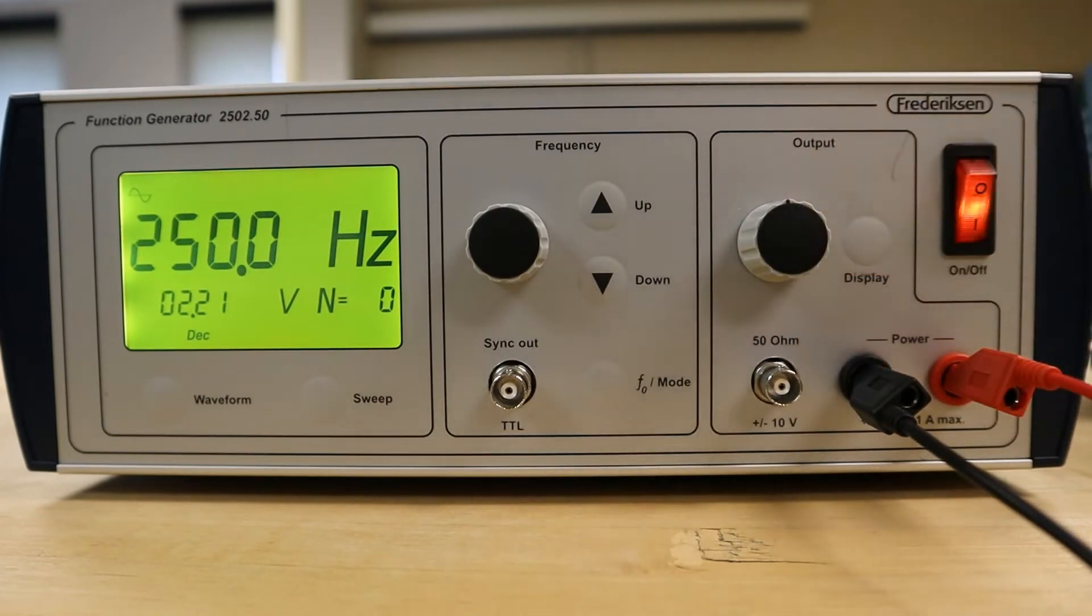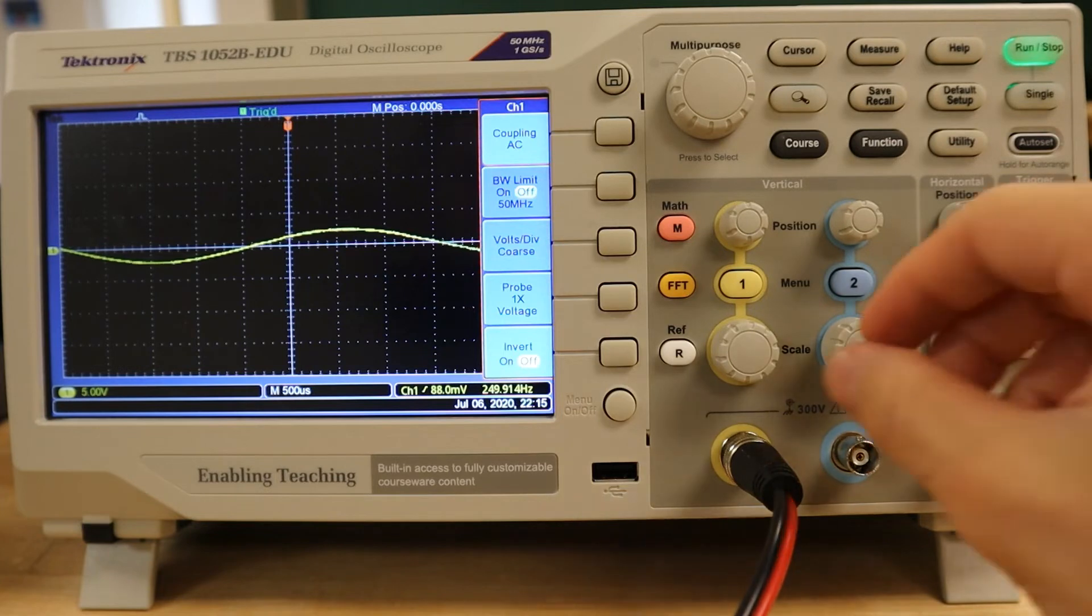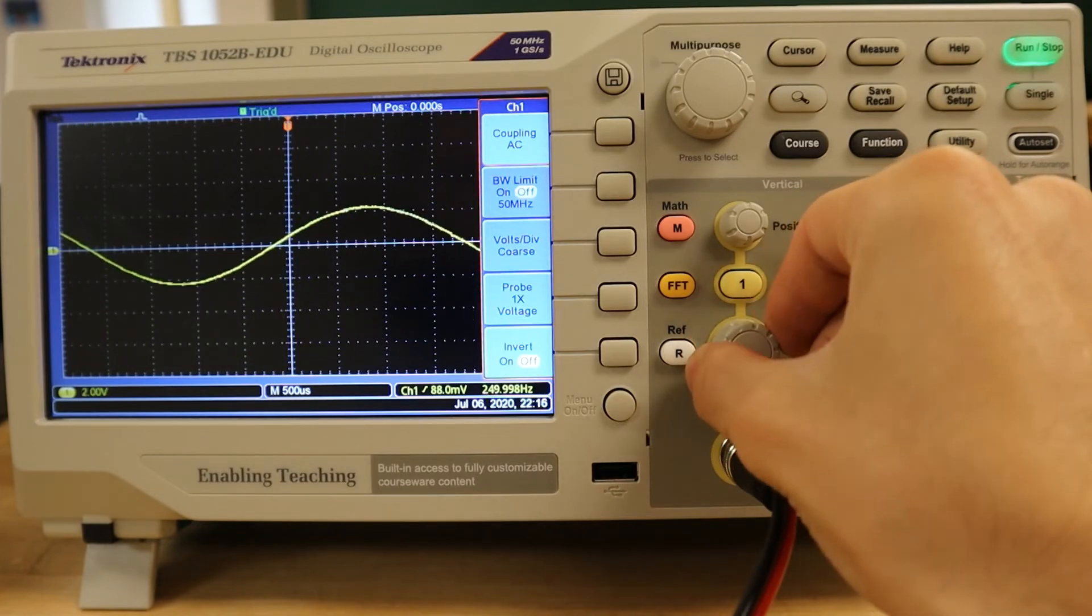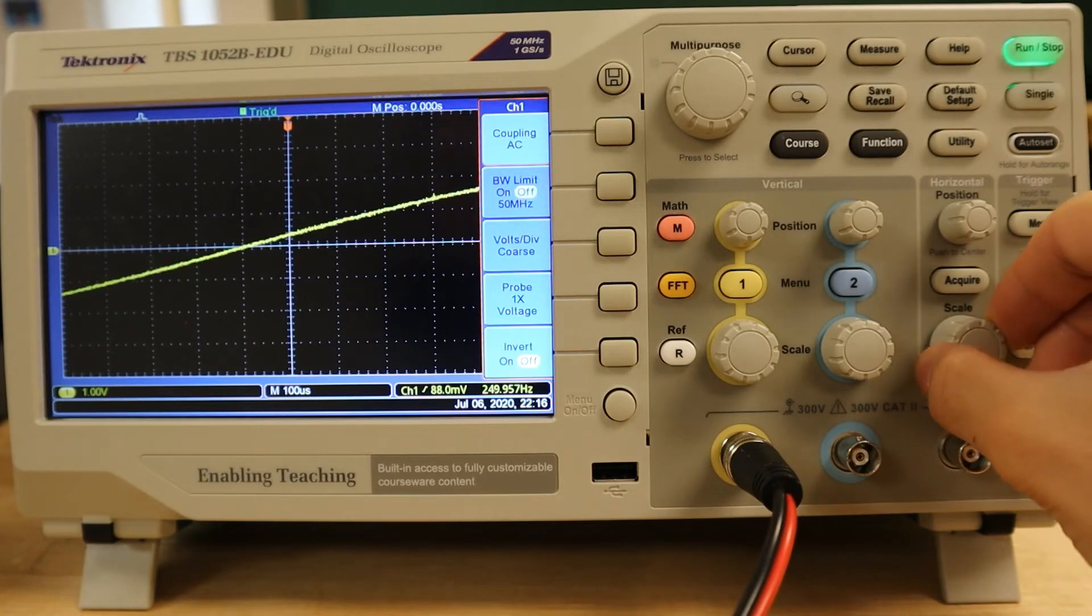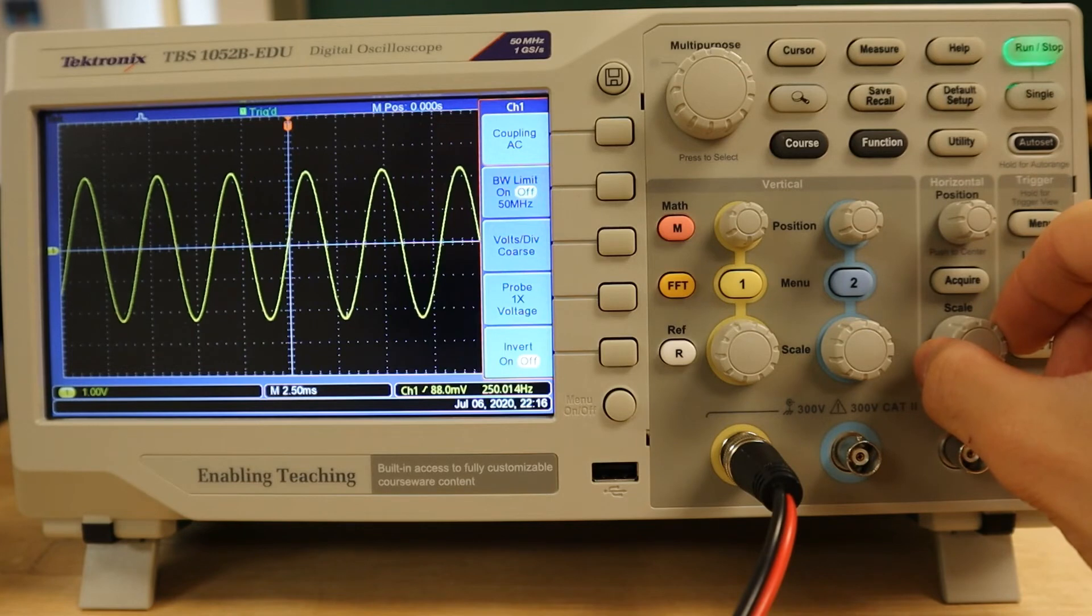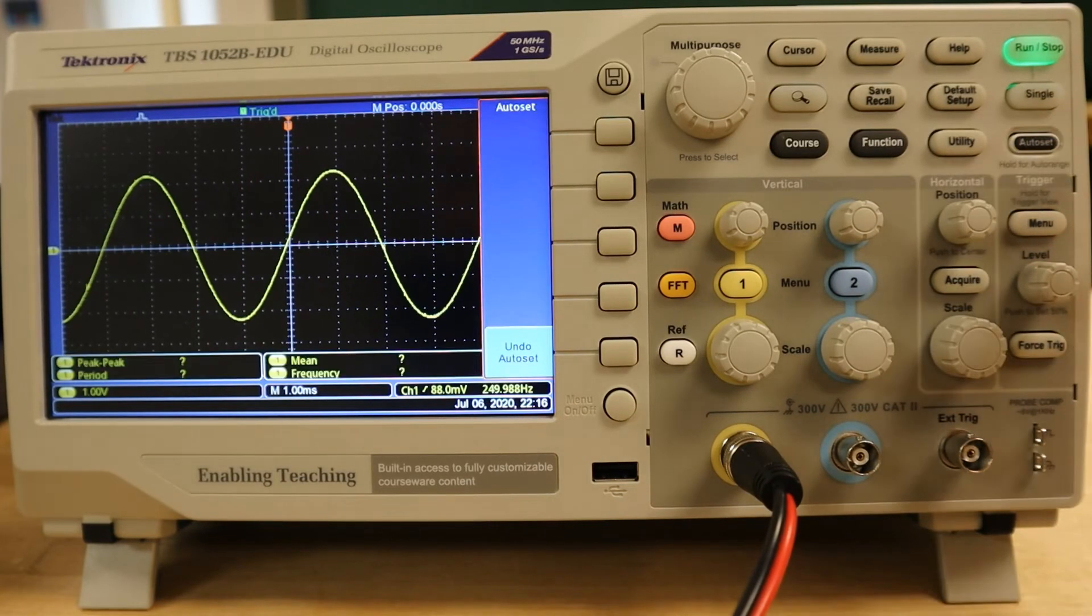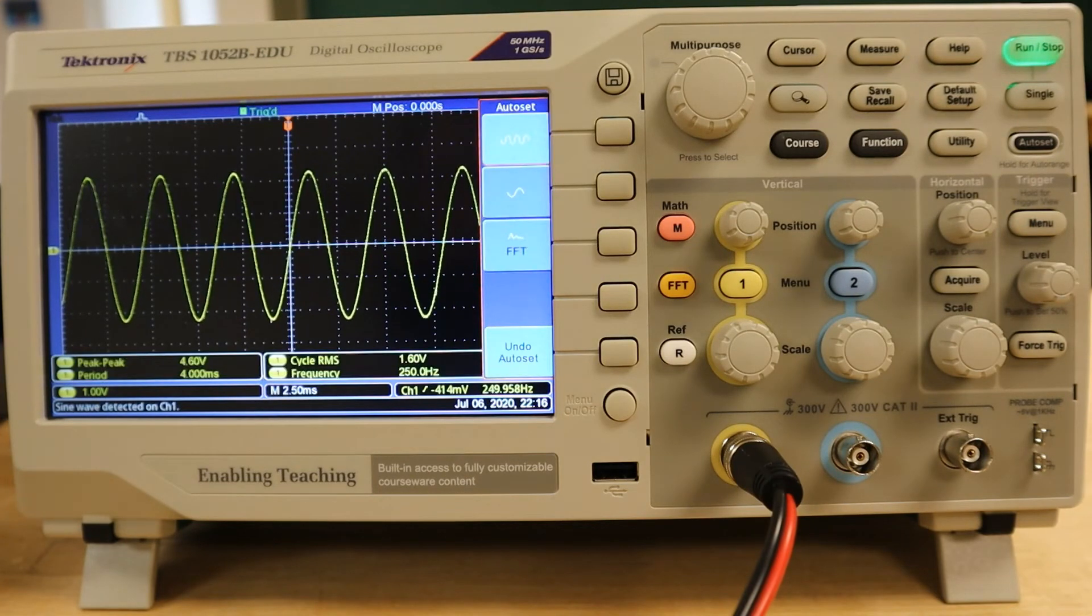Depending on how the waveform appears on the oscilloscope, we may need to adjust the scale to be able to see a desired number of oscillations. If the waveform is too tall or too short, we will adjust the vertical volts per division scale. And if the waveform is too spread out or too close together, we will adjust the horizontal seconds per division scale. Alternatively, on some digital oscilloscopes such as this, the device may be equipped with an auto-set or auto-scaling option, which can be utilized to more rapidly fit the waveform to the viewing screen.